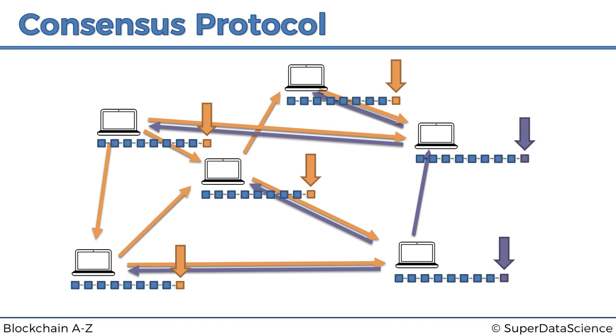Well, in blockchain the consensus protocol is different. What the nodes do is: okay, you've got a purple block, I've got an orange block. We've got two versions of the chain, competing chains.